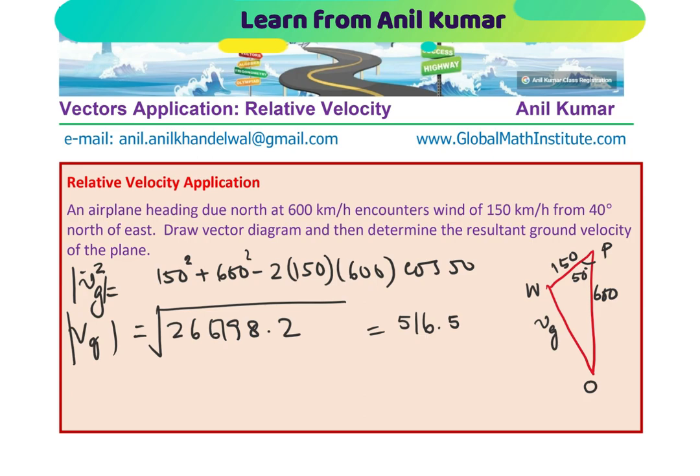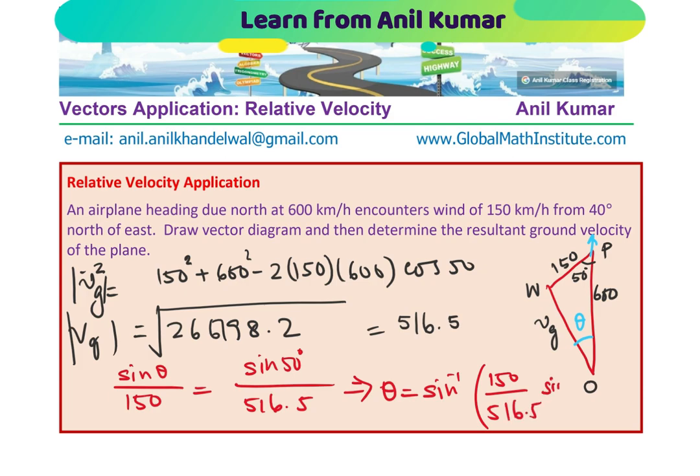Now, we need to provide the angle also. How will you find the angle? Well, the best way is to find the angle from the north. This is north for you. So, we can find this particular angle. So, let us say this angle is theta. We can use sine law to find this angle theta. So, we know sine theta over the side opposite being 150 equals to sine of 50 over 516.5, the known angle.